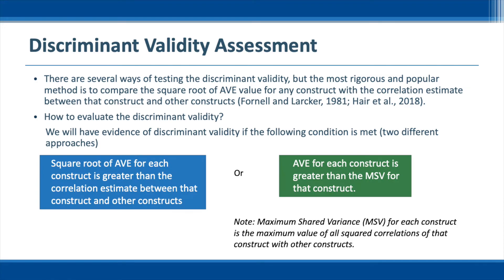As for discriminant validity, there are several ways of testing it. The textbook by Hair et al. explains these methods. The most rigorous and popular method is to compare the square root of the AVE value for any construct with the correlation estimates between that construct and other constructs. If the square root of the AVE value is greater than the correlation estimates, we can conclude that we have sufficient evidence of discriminant validity.